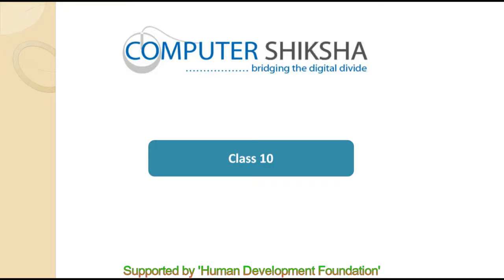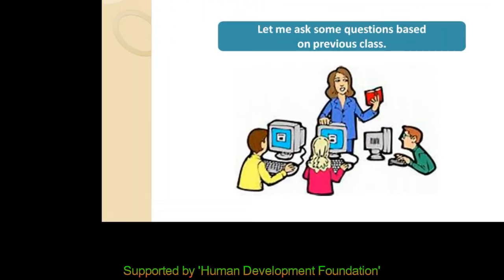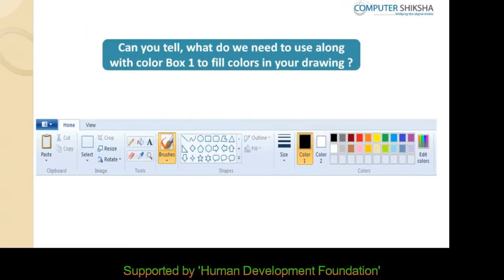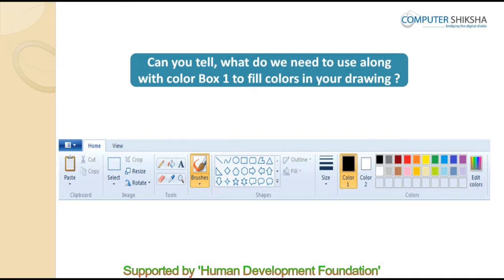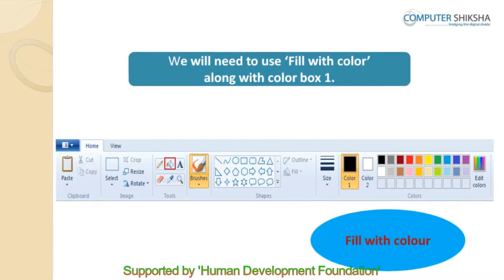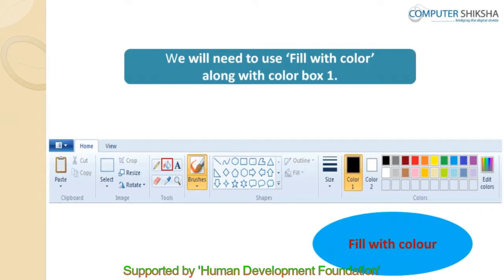Good day to all of you. In our last lesson, we learned about the rectangle tool. Let me ask some questions based on the previous class. Can you tell what do we need to use along with color box 1 to fill colors in your drawing? In any drawing, to add color, we need to use fill with color along with color box 1.